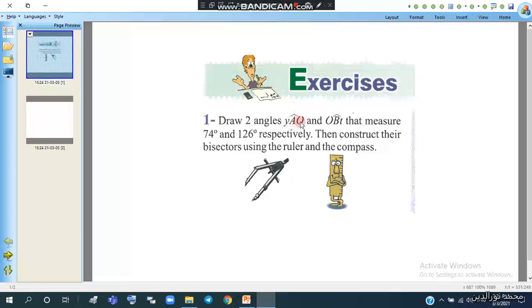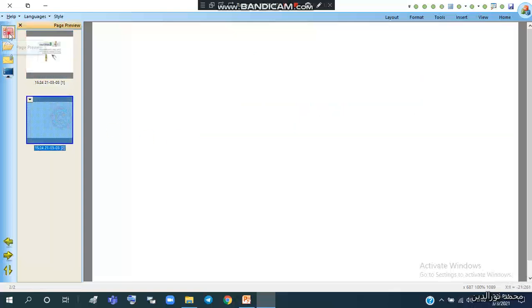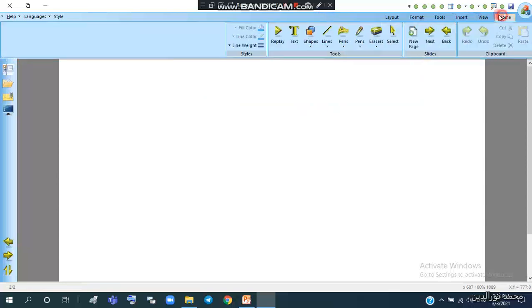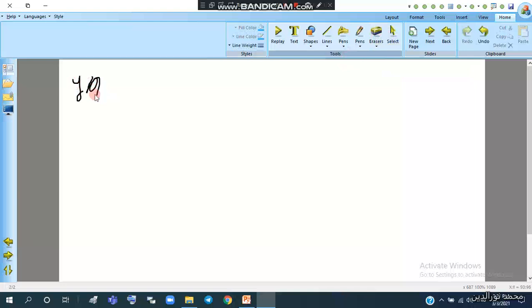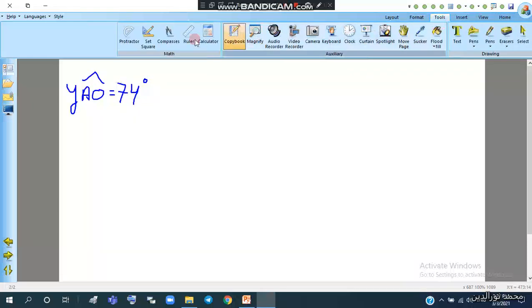The angle YAO equals 74 degrees. First of all, we have to know the elements of this angle. This angle has vertex A and two sides, AO and AY.